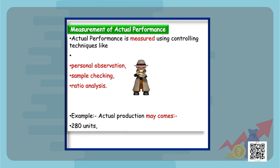The next step is measurement of actual performance. Actual performance is measured using controlling techniques like personal observation, ratio analysis, and sample checking. For example, we are personally observing that every laborer is producing around 280 units.